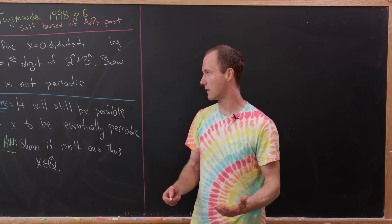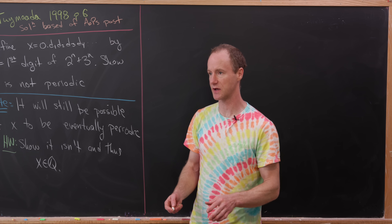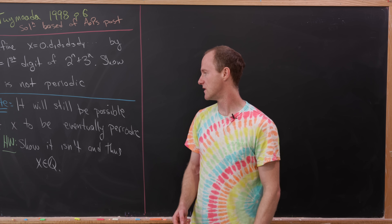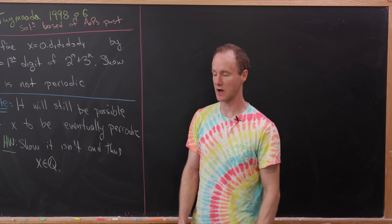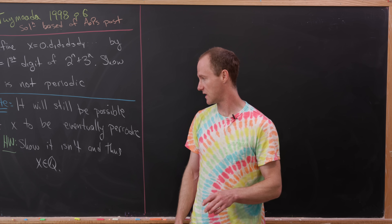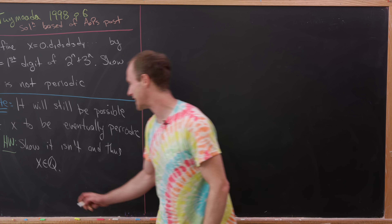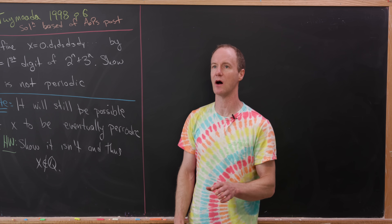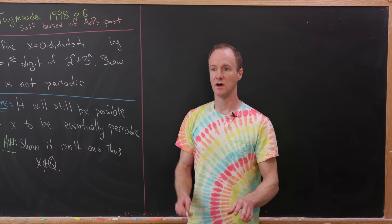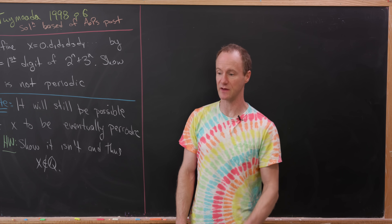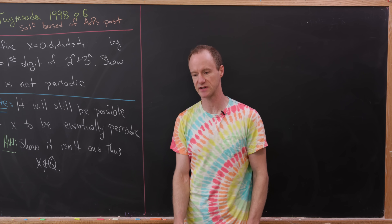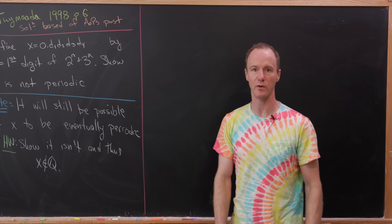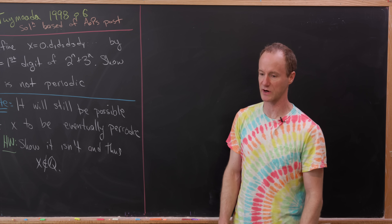Our goal for this problem is to show that x is not periodic. Note that this does not rule out the possibility that x could be eventually periodic. If we could show that, then x would be an irrational number, giving us that family of irrational numbers. That's why this problem points towards a construction of a lesser-known family of irrational numbers but doesn't actually construct it. You can play with the bigger problem as a homework exercise if you'd like.